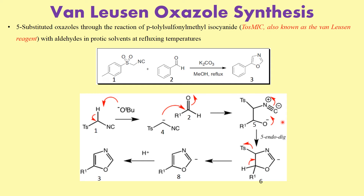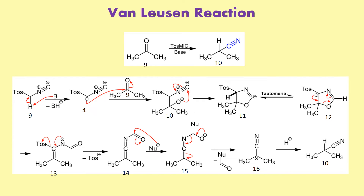Now let us look at what happens when we take ketones instead of aldehydes. If we use ketones instead of an aldehyde, this reaction variant is known as the Van Leusen reaction — a simple reaction. In that case, treating a ketone with TosMIC in the presence of base gives a nitrile species — the carbon is replaced with a CN group. The steps involve abstraction of the proton by the base, generating the species, followed by attack on the ketone, then O-minus attack on the other side via 5-endo-dig to give a particular intermediate.